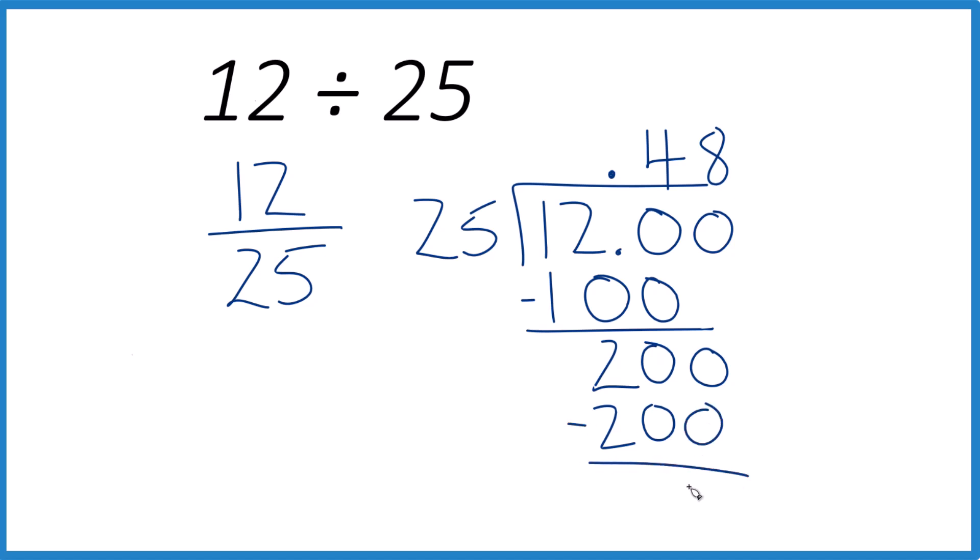Subtract, no remainder. We're done. So 12 divided by 25 is 0.48. We usually put a zero out here to make it clear.